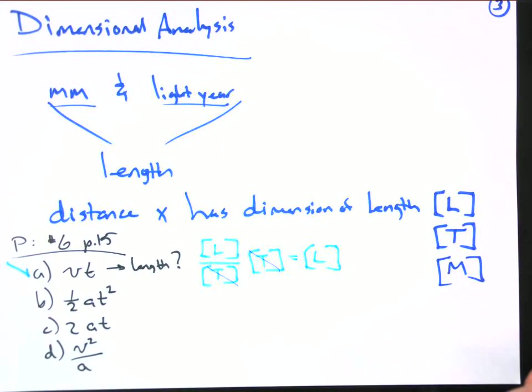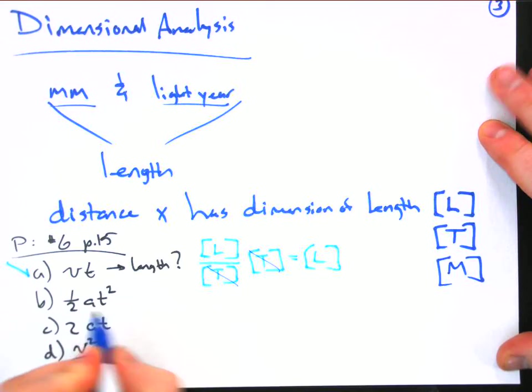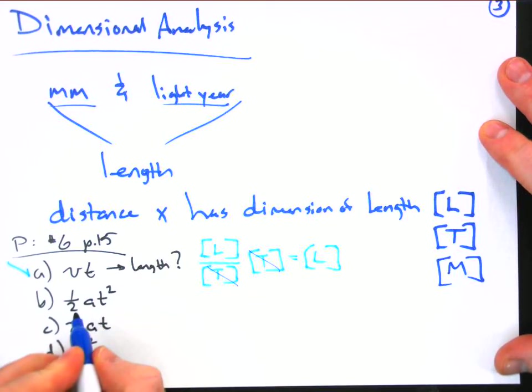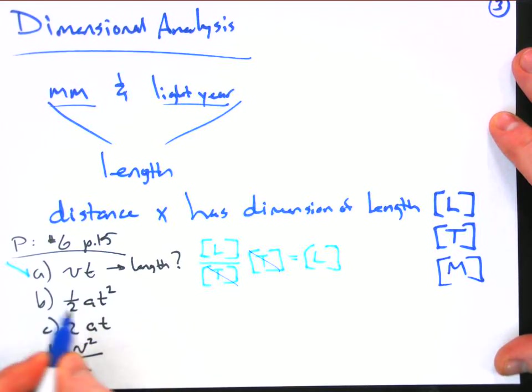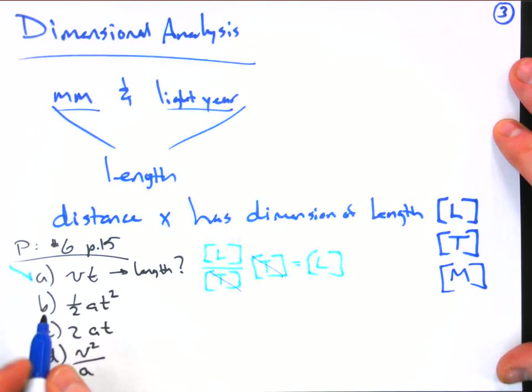So now, what about this guy? Well, okay, we have a one-half. Now, a number like a one-half is just, it's like a coefficient. There is no dimension to that. It's not a measurement of a certain quantity. It's just a number. So we don't get any dimension like this from the one-half. But the acceleration, well, the acceleration is a length per unit time squared. That exponent is real important right there.